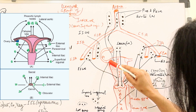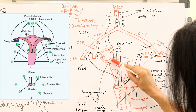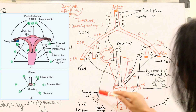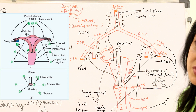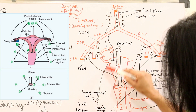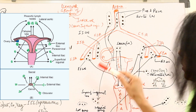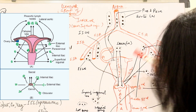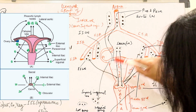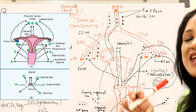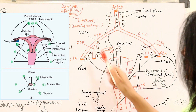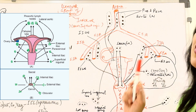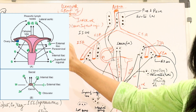Coming to the uterus — the fallopian tube drains into the superior group of the lumbar lymph nodes. The cornual region of the uterus, just near the fallopian tube insertion, drains directly into the medial group of superficial inguinal lymph nodes. So the cornual part is the only uterine region where lymph nodes may be superficially palpable.